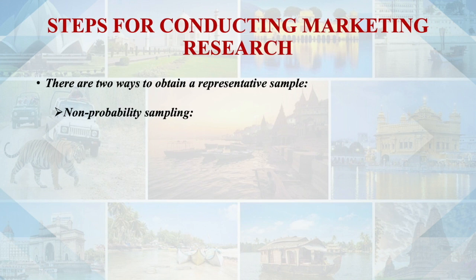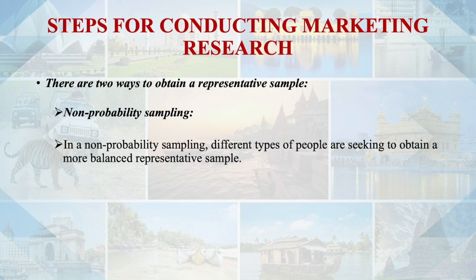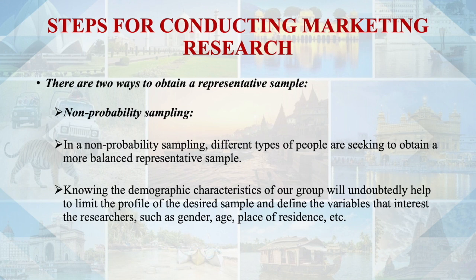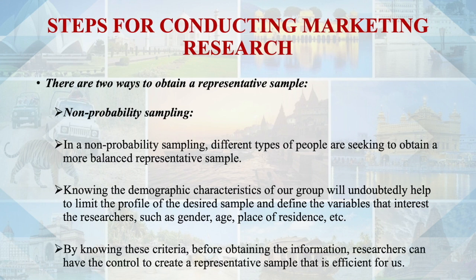In non-probability sampling, different types of people are sought to obtain a more balanced representative sample. Knowing the demographic characteristics — such as gender, age, and place of residence — helps limit the desired sample profile. When a sample is not representative, there can be a margin of error. For example, if researchers want a representative sample of 100 employees, they should choose a similar number of men and women. Sample size is very important, but does not guarantee accuracy.